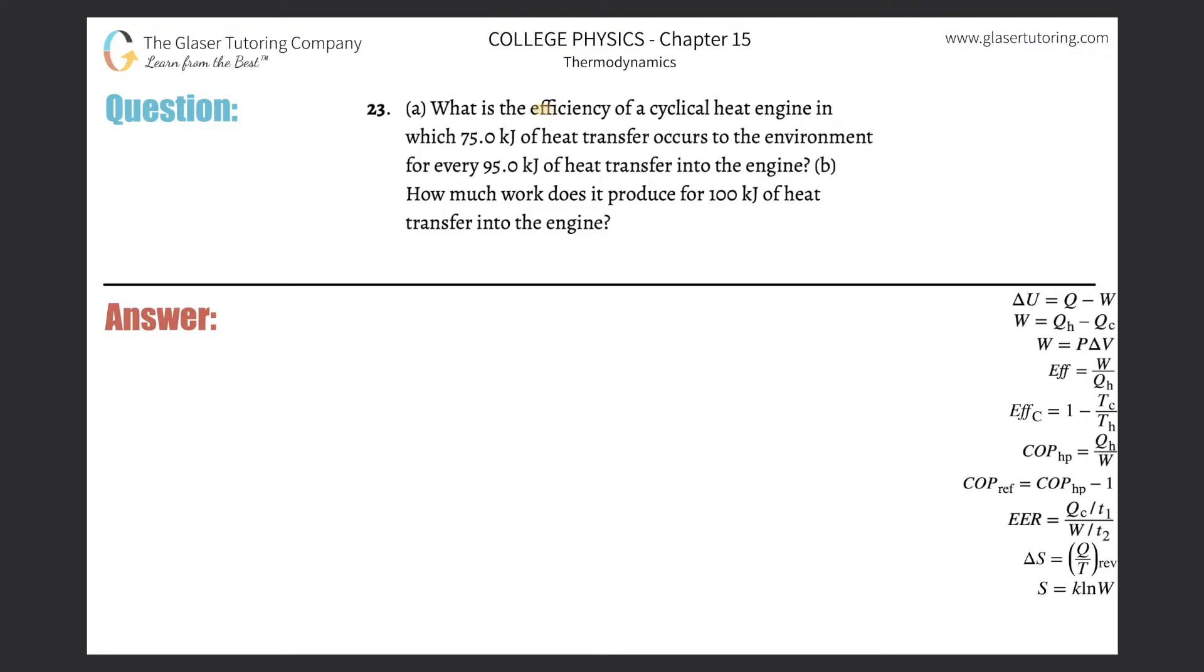Number 23, letter A: What is the efficiency of a cyclical heat engine in which 75 kilojoules of heat transfer occurs to the environment for every 95 kilojoules of heat transfer into the engine?